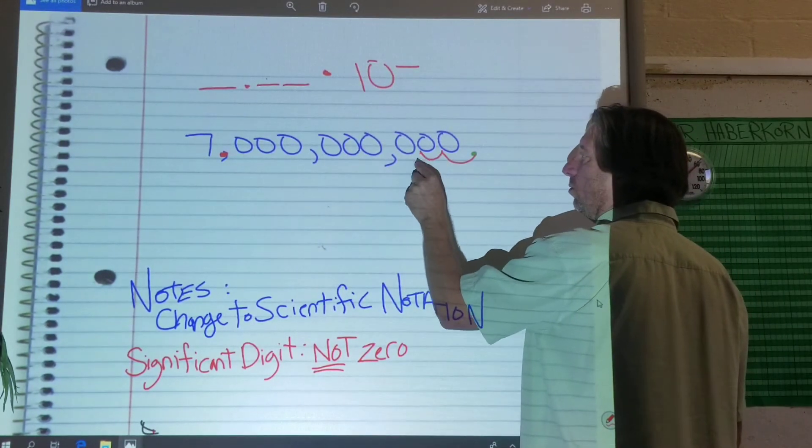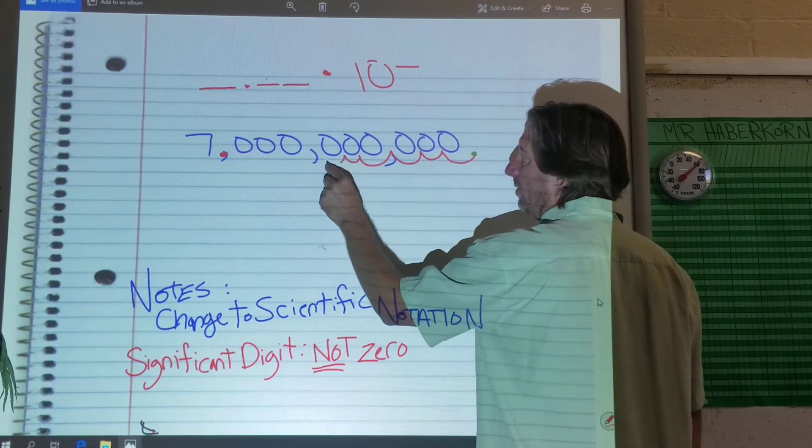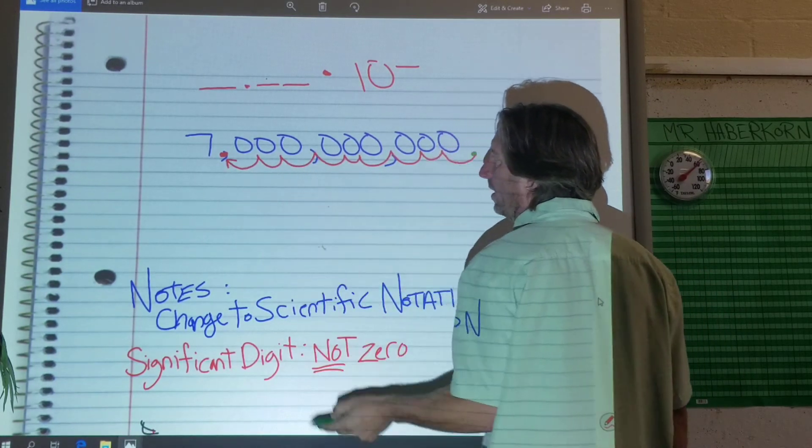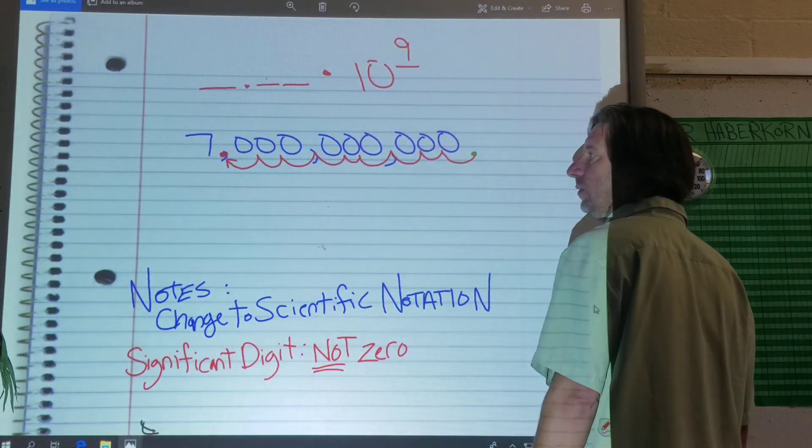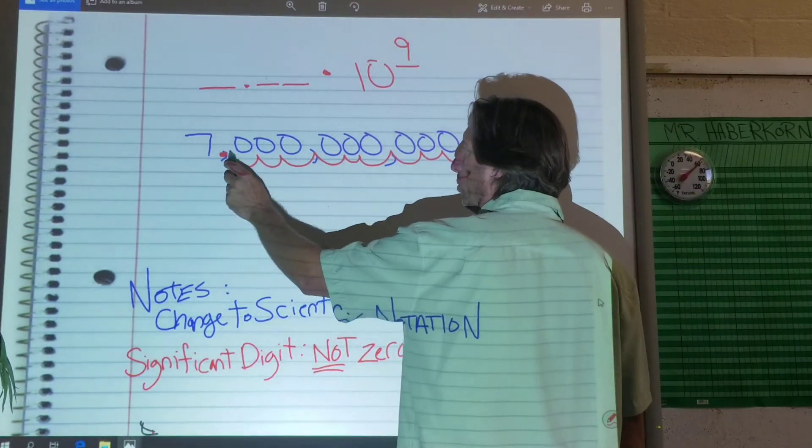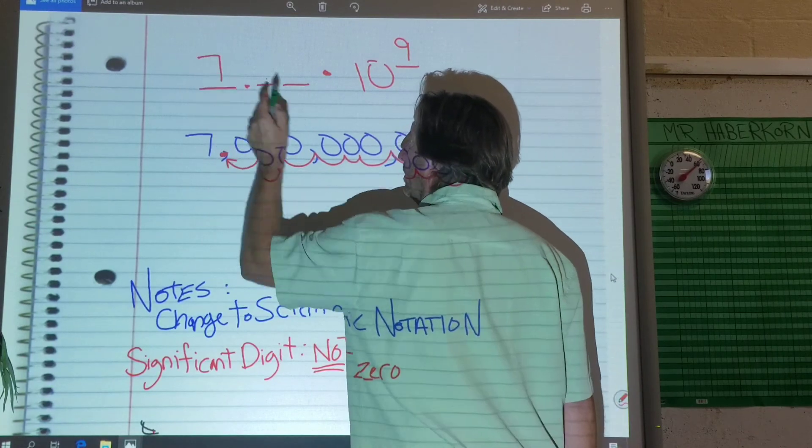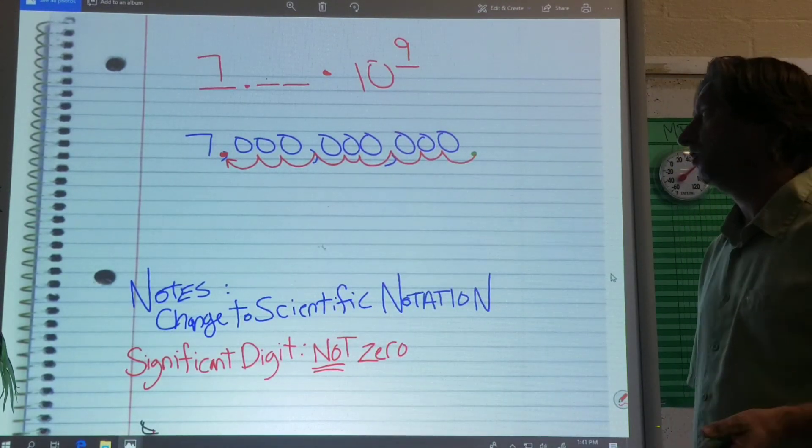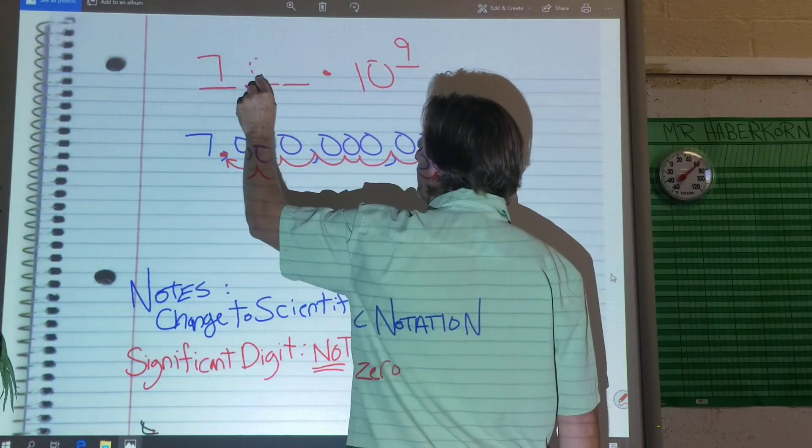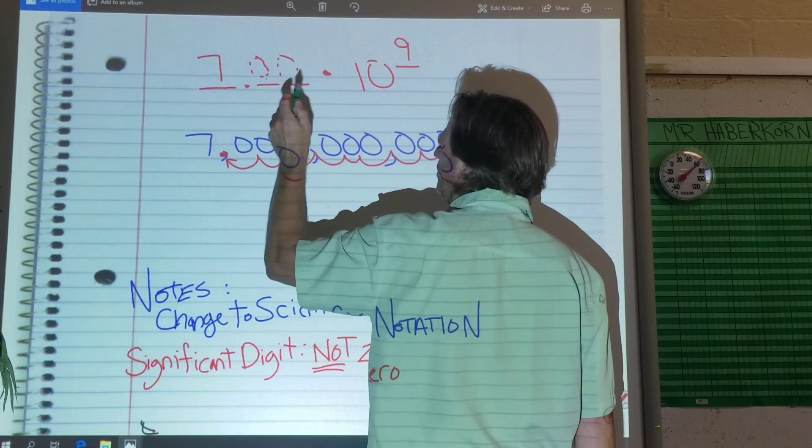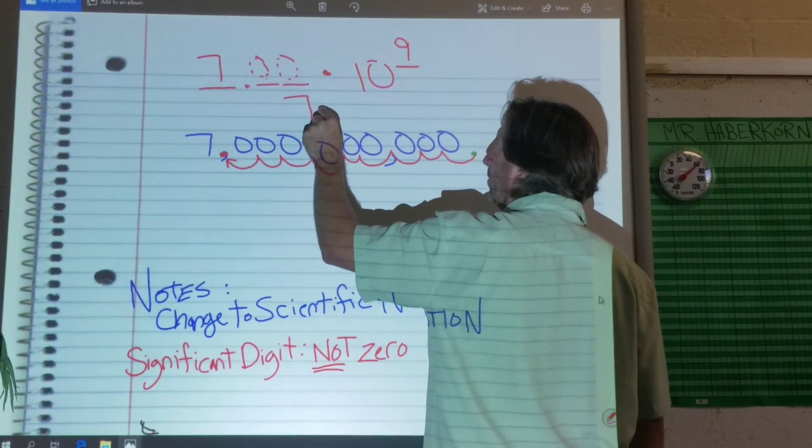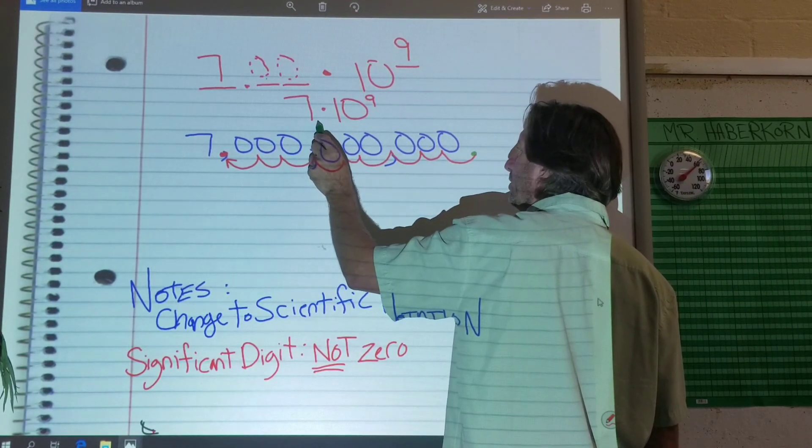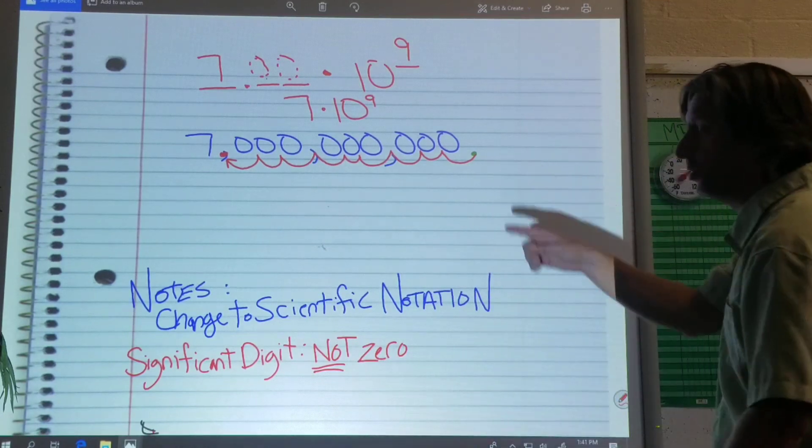1, 2, 3, 4, 5, 6, 7, 8, 9 spaces, right? And then I have 7.00. Does 7.0 mean the same as 7? Yeah. So I don't need to write these zeros. We don't need them. So my answer is just 7 times 10 to the ninth. Now there's a point at the end here, but you don't need to write it. It's hiding. It's just like the original number.